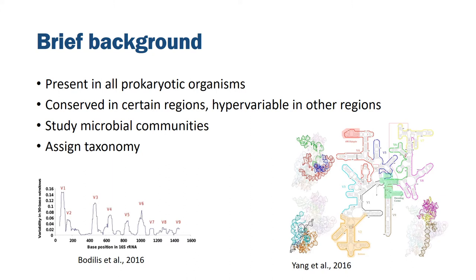16S rRNA is a widely used marker in microbial community surveys. This is a marker that is highly conserved in certain regions and has hypervariable regions as well, making it a good amplicon for assigning taxonomy.